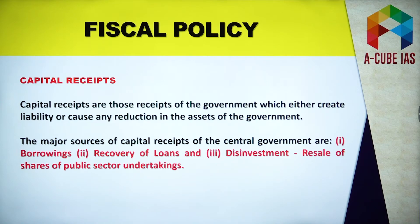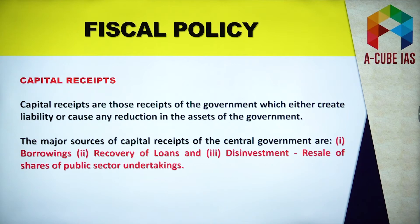Foreign borrowings by the government bring in foreign exchange into the domestic economy. Then there is recovery of loans — loans recovered by the central government from state and local governments are capital receipts in the budget because recovery of loans reduces debtors, and debtors are assets. So remember, recovery of loans falls under capital receipts.